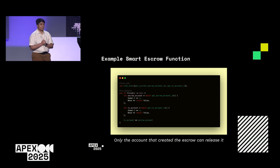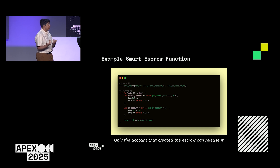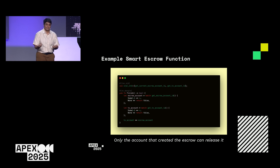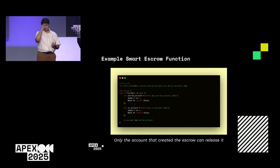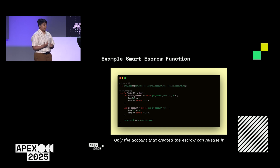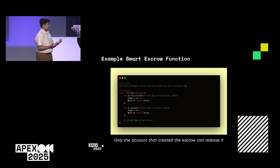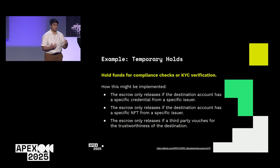Here's a basic function and what it might look like. Written in Rust, there's a single function called finish that returns a Boolean — true or false — essentially: can this escrow be released or not? There's a small standard library containing an API for what information you can access and fetch from the XRPL. In this example, you can get the escrow account ID and destination. All this does is ensure that only the account that created the escrow can release it.